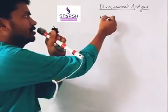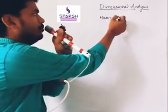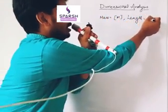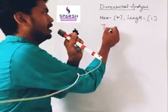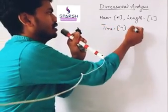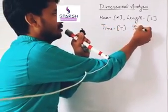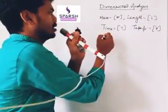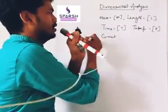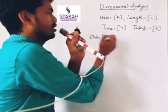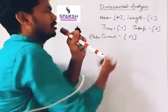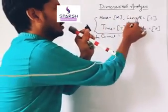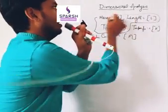Mass can be written as M. Length can be written as L. Time can be written as T. Temperature as K. Electric current as A. Especially in class 11th we need these three: mass, length, and time.